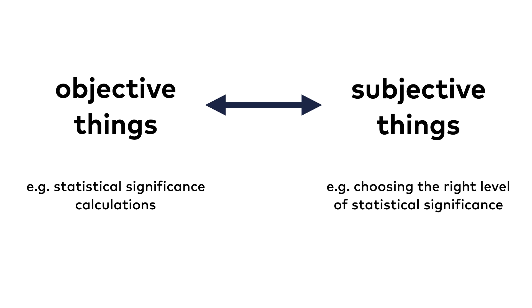Remember that you have to choose the right level of statistical significance — 90%, 95%, 99%, or something else — in your A-B tests, based on your risk tolerance. And risk tolerance is often a question of emotions rather than logic.